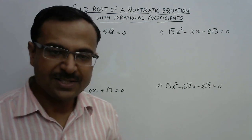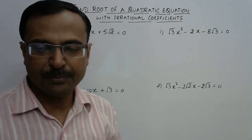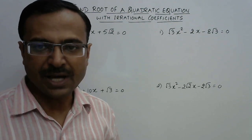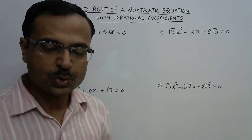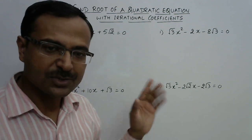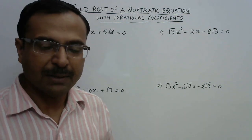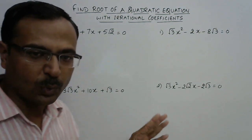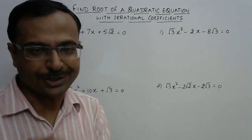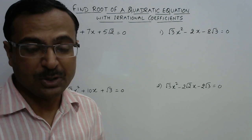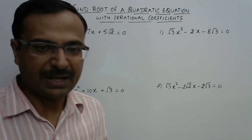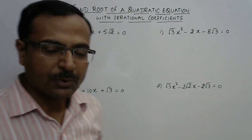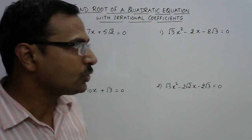Hello friends, in this video I shall take up four problems of quadratic equations in which the coefficients are irrational. Students face a lot of problems in solving such questions, and I'm going to solve all four questions which I have written on the board using a shortcut. This is going to be useful for all students who are preparing for competitions as well. The first question I am going to take up is: √3x² - 2x - 4√3 = 0.